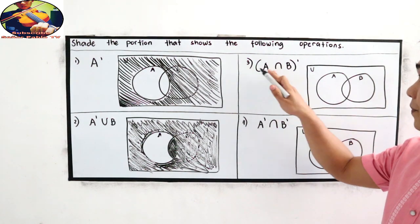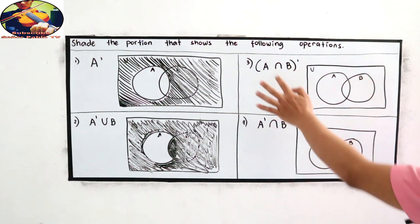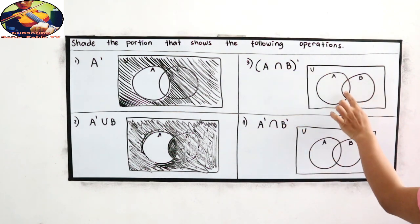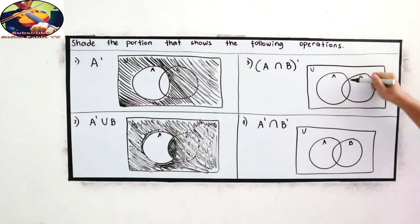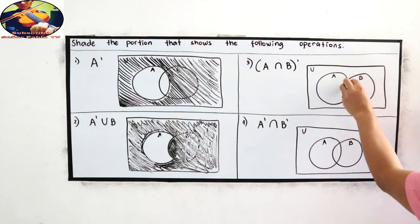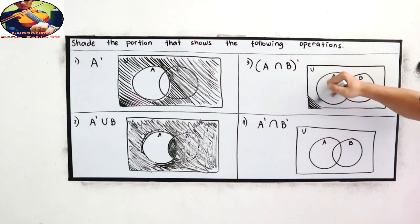Next, number three. A intersection B. So where is intersection of A and B? So in this part. But we're going to shade outside their intersection. So we will not include the intersection. This is the intersection part. Then shade the outside portion. So we're going to shade it now.